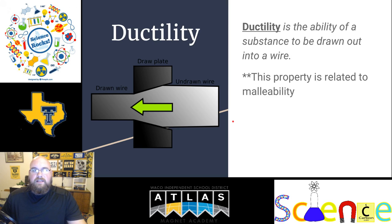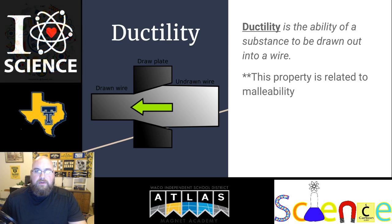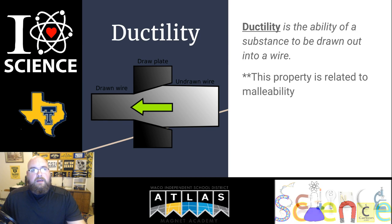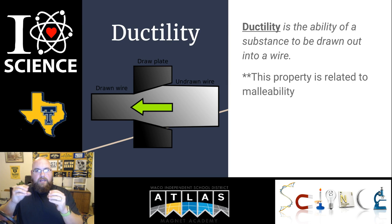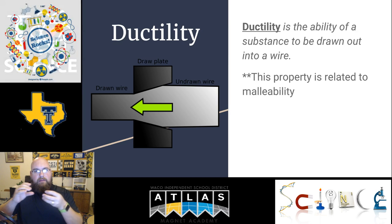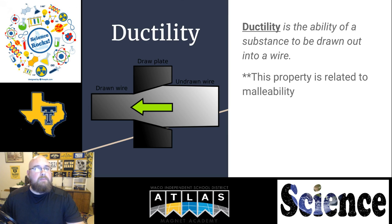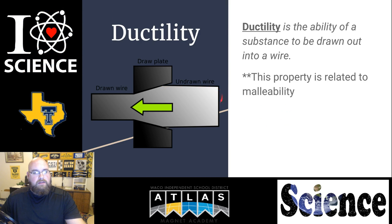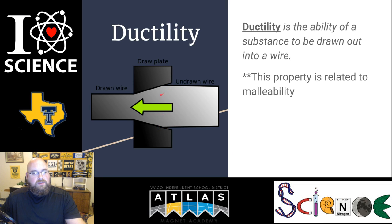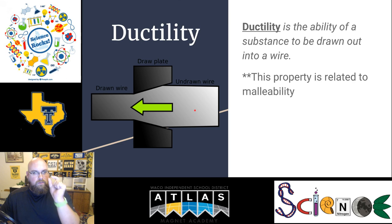The next physical property is ductility, which is related to malleability in that it involves how something can change shape without breaking. Ductility is the ability to be drawn out into a wire — taking a block of a substance and pulling it thinner and thinner, or squishing it down until it forms a wire. As the draw plate opening gets thinner and thinner, the wire decreases in diameter.